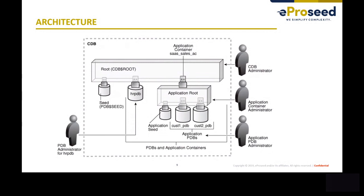Another possibility is connecting directly to the PDB through TNS, Oracle network, with an alias and listener. What is an application container? It's a new thing introduced in Oracle 12c release 2 where application developers can install applications and then synchronize multiple PDBs belonging to the same application root using BEGIN INSTALL / END INSTALL and BEGIN UPGRADE / END UPGRADE commands. You can create tables, procedures, everything, and then launch ALTER PLUGGABLE DATABASE APPLICATION [name] SYNC or ALL SYNC.